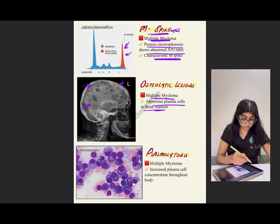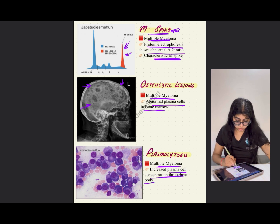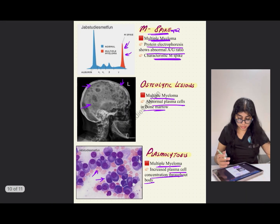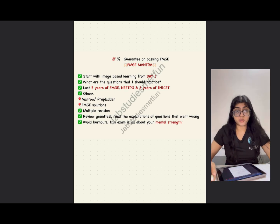Plasmacytosis is again seen in multiple myeloma — it is an increased plasma cell concentration throughout the body. You can see that more than the WBCs, the plasma cells are present. That's it for RBC and WBC disorders for today. Thank you so much.